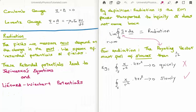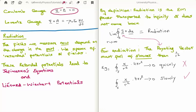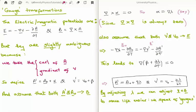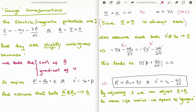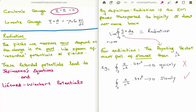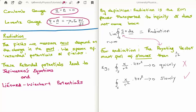The two most important gauges are the Coulomb gauge and the Lorentz gauge. In the Coulomb gauge we choose the divergence of A to be zero, achieved by adding the gradient of a function λ to A while simultaneously subtracting ∂λ/∂t from V, giving the same physical fields but a simpler calculation. In the Lorentz gauge we instead choose the divergence of A to equal minus μ₀ε₀ ∂V/∂t.